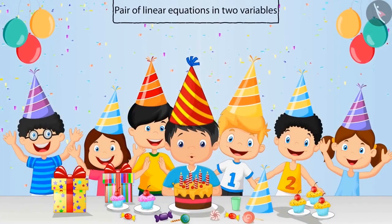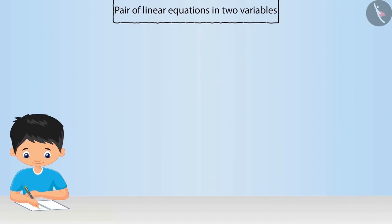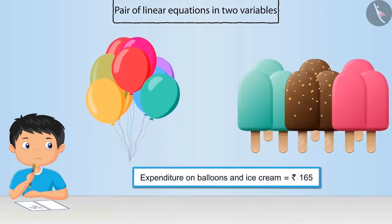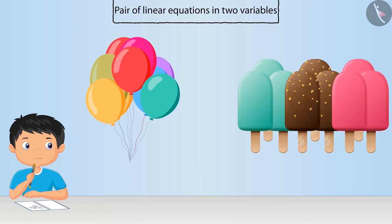Yesterday was Rahul's birthday and today he is calculating the total money he had spent. But he is confused. Rahul had bought some balloons and ice creams from the shop yesterday for a total of 165 rupees. But now he doesn't remember how many balloons and ice cream he had bought yesterday.